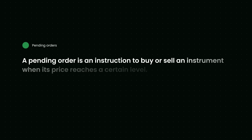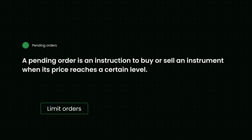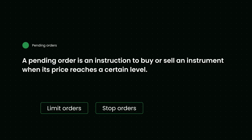A pending order is an instruction to buy or sell an instrument when its price reaches a certain level. Pending orders fall into three categories: limit orders, stop orders, and stop limit orders.